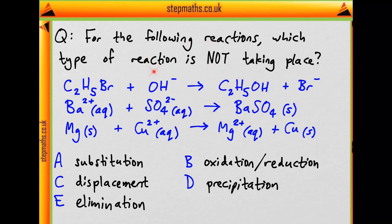And so our reactions are bromoethane plus the hydroxide ion forming ethanol and bromide. Then barium 2 plus and sulfate, both in solution, forming solid barium sulfate. Then we have magnesium metal and copper 2 plus forming magnesium 2 plus and copper metal.